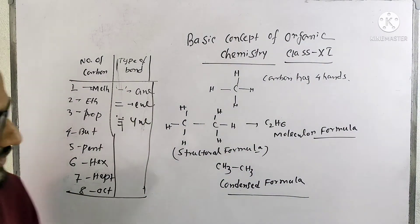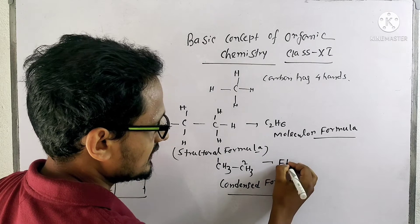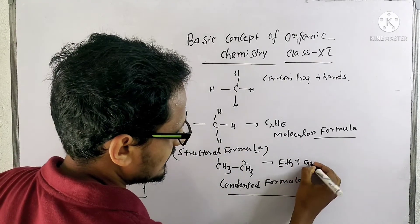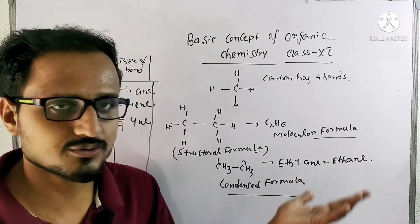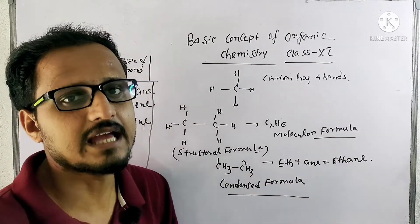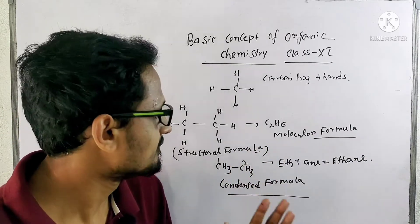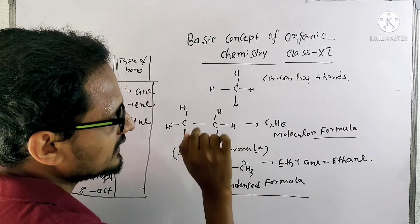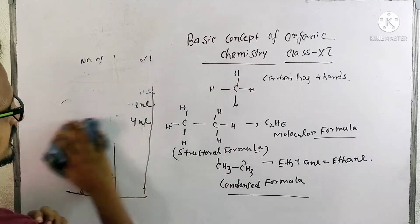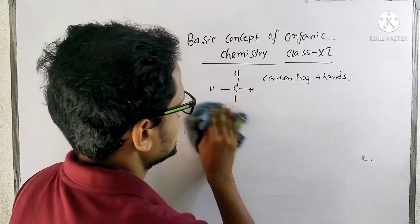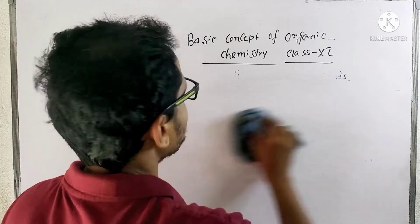For this compound, how many carbons are there? 2 carbons, so it is ETH-. And it has a single bond, so it is ethane. This is the kind of nomenclature we will use. But full IUPAC nomenclature I will tell you in another separate video. So the main point here is to understand what is molecular formula, structural formula, and condensed formula.